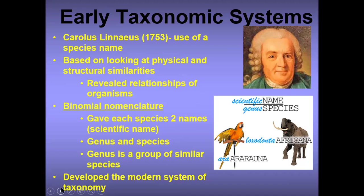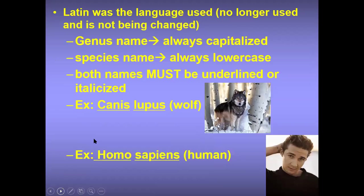Because Latin was the language used at that time, Linnaeus used Latin. Latin is no longer in active use, so it doesn't change — it's a constant language. So anywhere in the world you are, you're able to use those two names to identify a particular organism. In Jamaica we might call it a frog, but in another country it could have a different name. So scientists use Latin so that the identification of organisms is consistent everywhere.